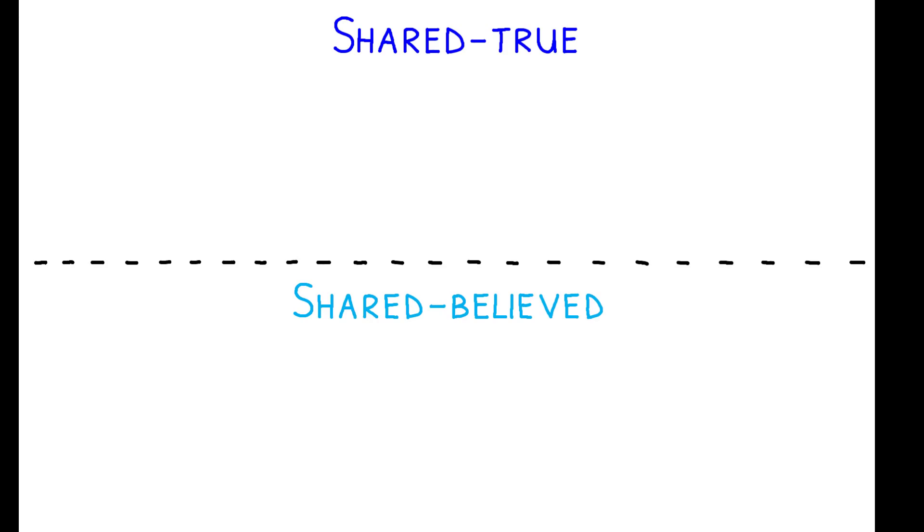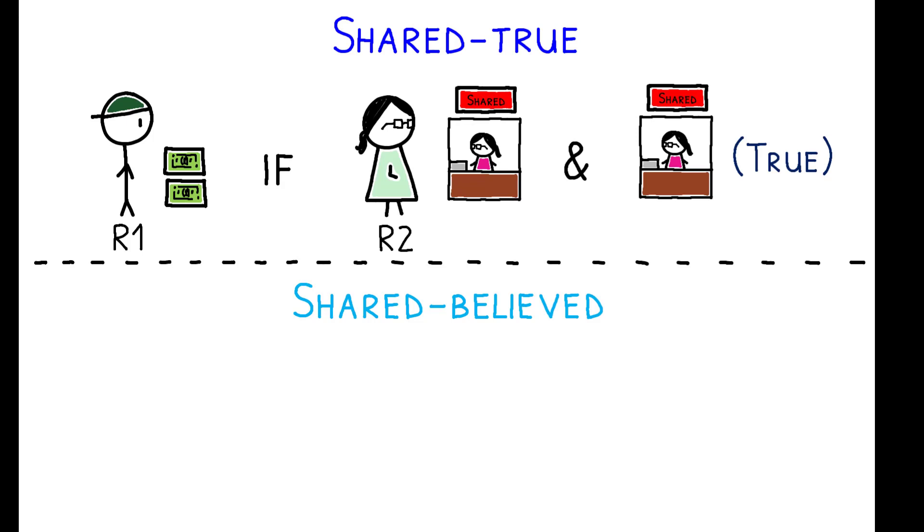To control for different motivations for sharing, there were two different treatment groups. In the first, R1 was paid a bonus if R2 picked the shared video to watch and that video was true.